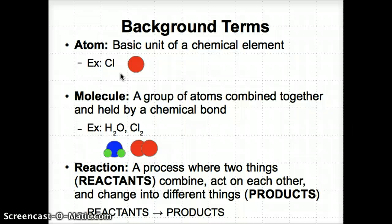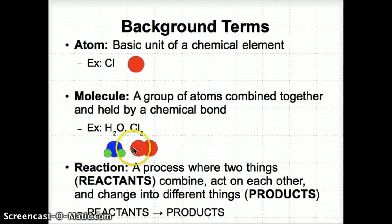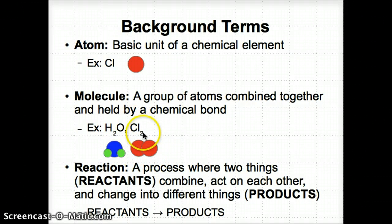Next, we have molecules. A molecule is a group of atoms combined together and held by a chemical bond, which is a lot like glue. For example, H2O is two H atoms — shown as green spheres — and one O atom — the blue sphere in the middle — combined and held by a bond like glue. Also, Cl2 is two Cl atoms — the two red spheres — combined together and held like glue.